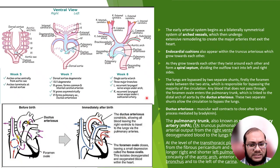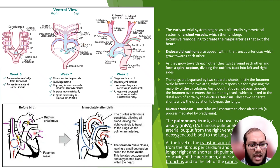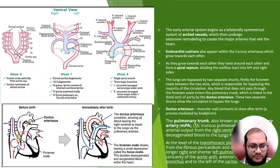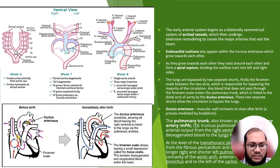The arterial system begins as a bilateral symmetrical system of arch vessels, which then undergo extensive remodeling to create major arteries that exit from the heart. The endocardial cushion also appears within the truncus arteriosus, growing towards each other. As they grow towards each other, they twist around each other and form a spiral septum, dividing the outflow tract into left and right. The lungs are bypassed by two separate shunts: firstly, the foramen ovale between the two atria, which is responsible for bypassing the majority of the circulation. Any blood that does not pass through the foramen ovale enters the pulmonary trunk, which is linked to the distal arch of the aorta by the ductus arteriosus. These two separate shunts allow the circulation to bypass the lung.